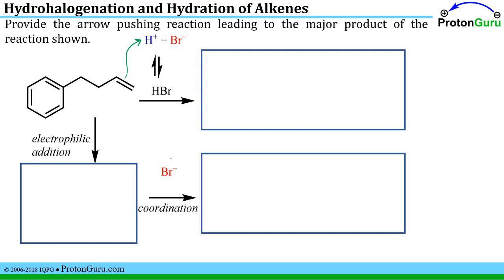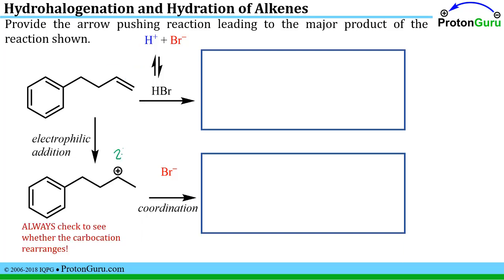First, what is the product of the electrophilic addition step? We add the hydrogen to one of the two carbons; the other carbon is left with only three bonds and therefore a positive charge. Which side should get the positive charge — the primary or the secondary? As the major pathway, you want the more stable carbocation, so we form a secondary carbocation. Now check whether it rearranges by looking beside the carbocation site. It won't become more stable by moving to primary or secondary adjacent carbons, so it won't rearrange.